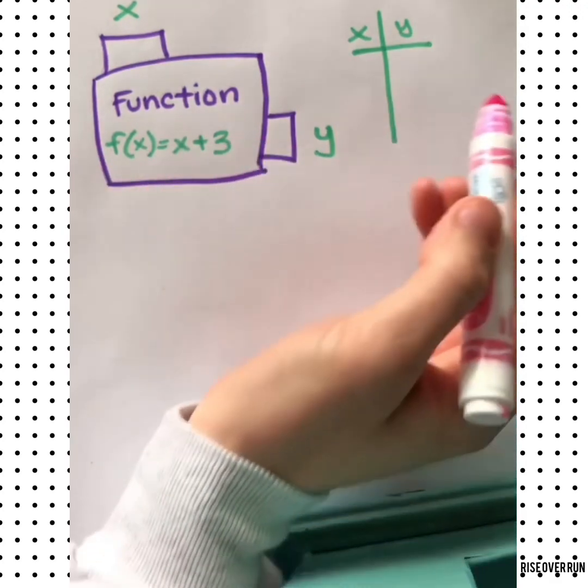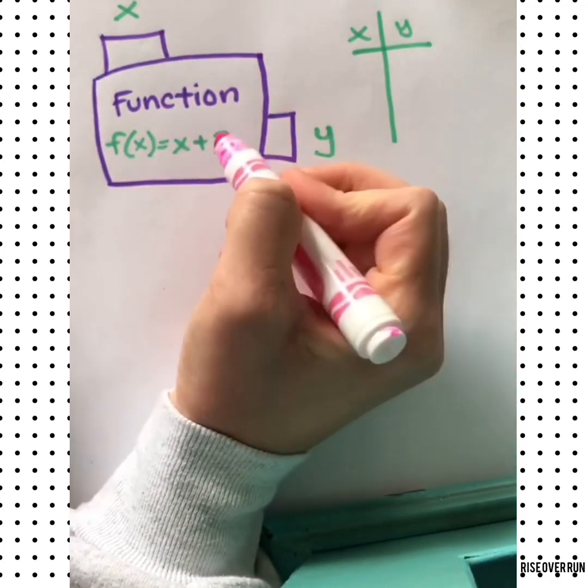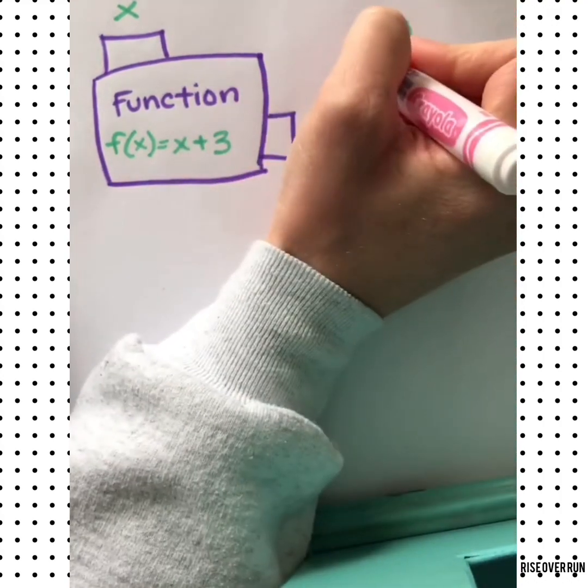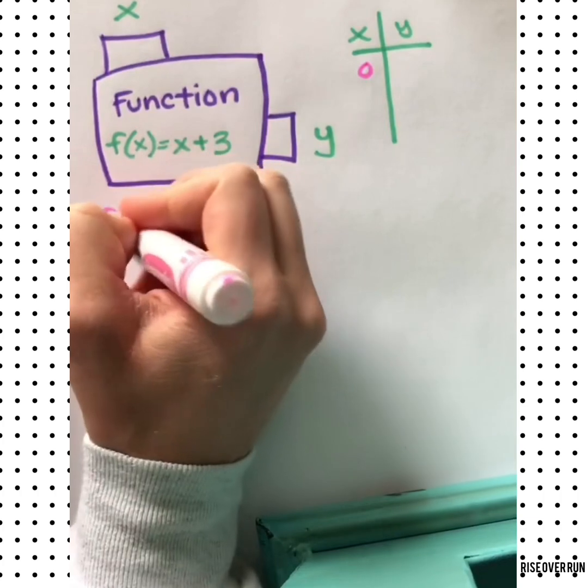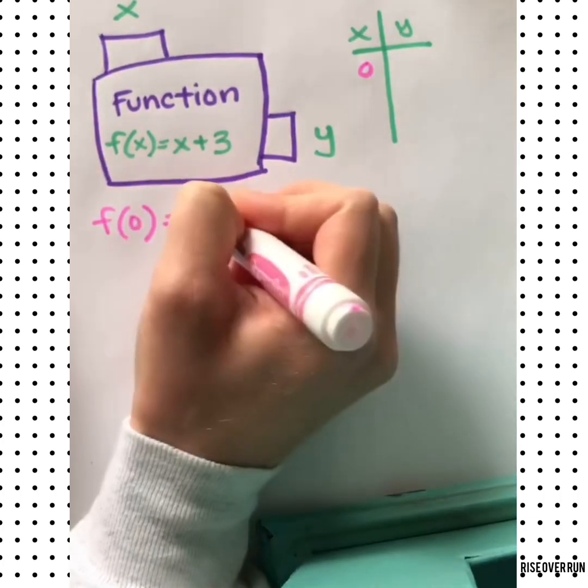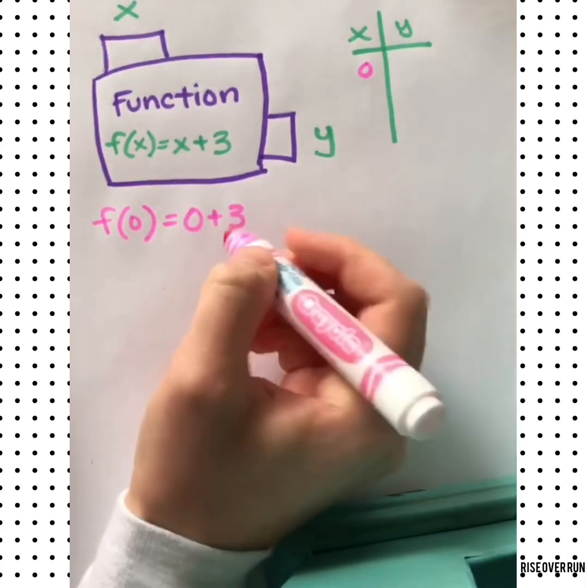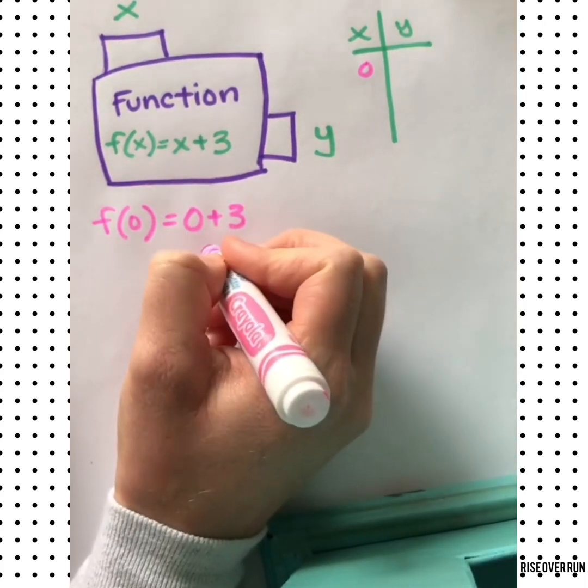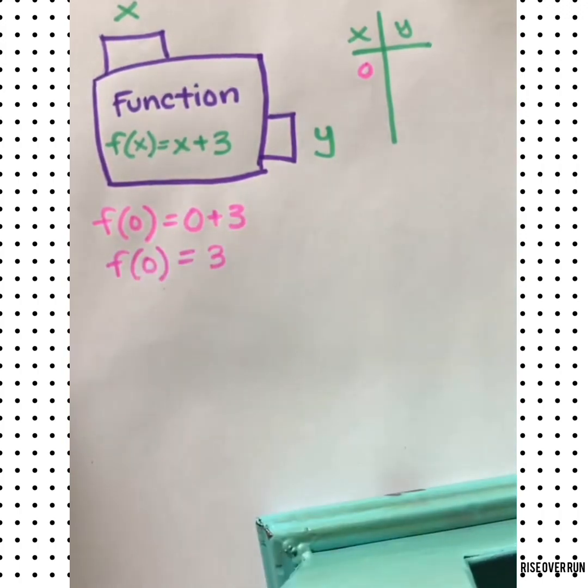If we were to use this function to build a table of values, we would pick out x values and plug them in for x. So let's start with 0. If 0 goes into this function as x, we write it like that, and then we still evaluate this part over here. 0 plus 3 is 3, so f of 0 is 3.